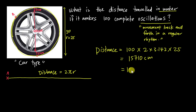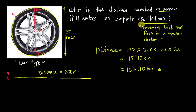So the answer is 157.10 meters — that's how far the car can travel if the tire completes 100 complete oscillations. I hope you find this video helpful.